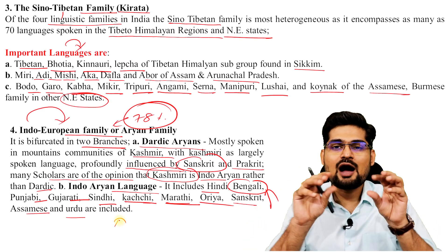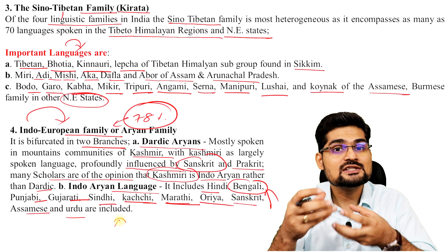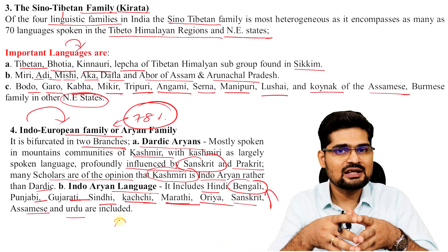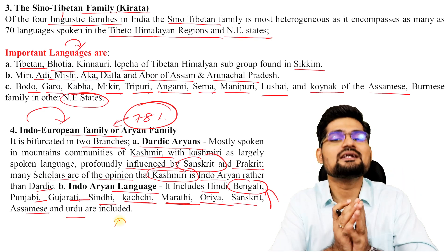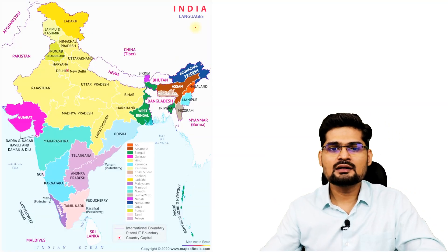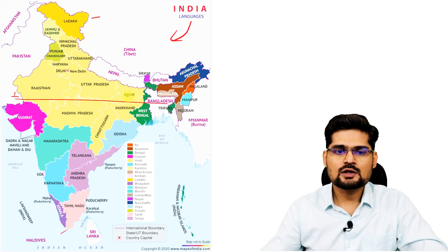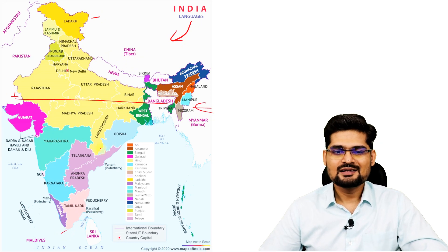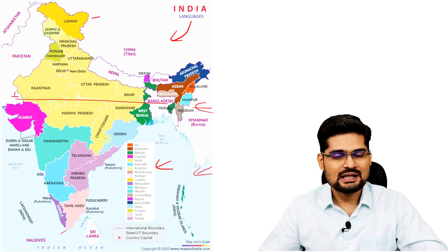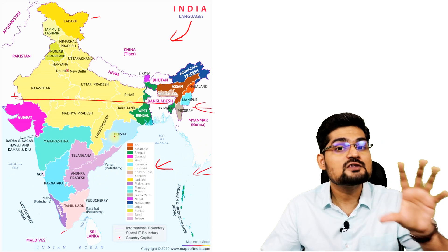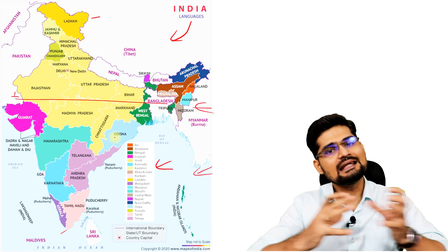Travel across India from north to south, east to west, and you'll find how languages change with space — that itself is a huge example of how linguistic plurality is part of human geography. This language map of India shows a huge diversity from top to bottom and east to west. You can pause the video here, look into this map, and practice it for your exam — noting which language is spoken where and which major family it belongs to in India.